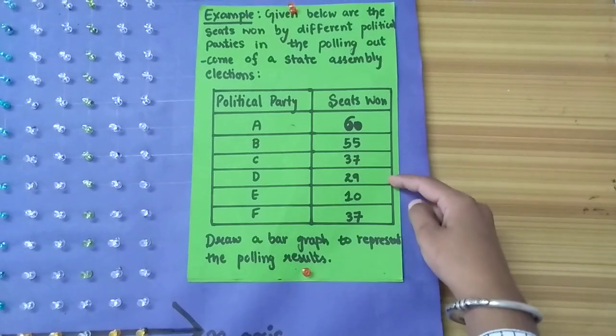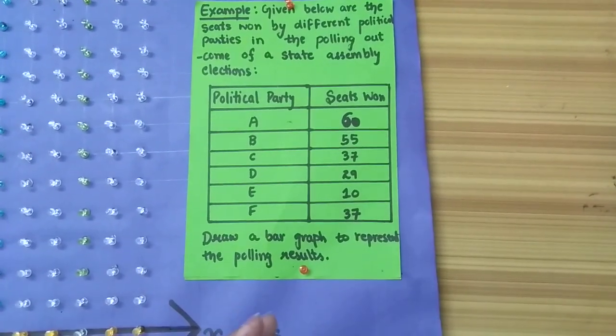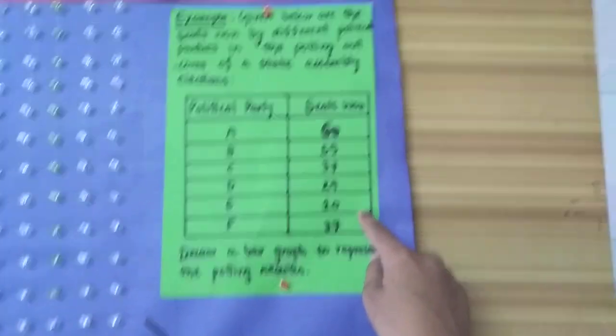And the seats won by them: 60, 55, 37, 29, 10, and 37.